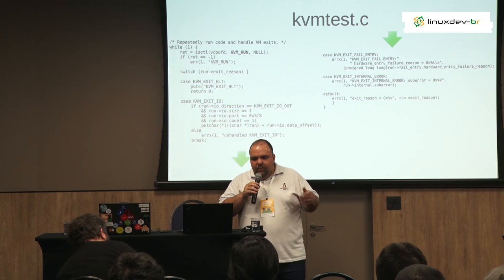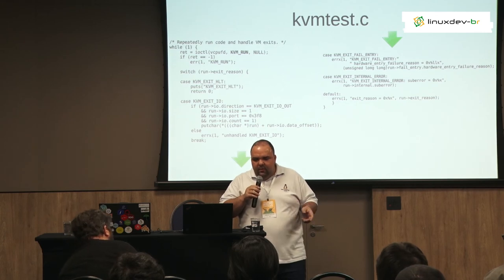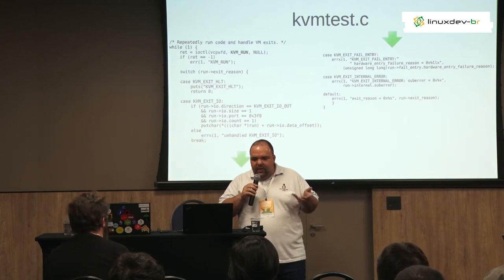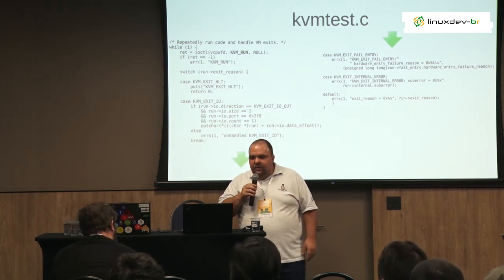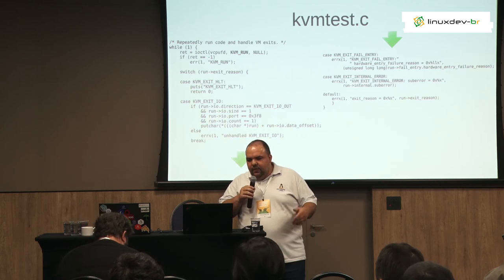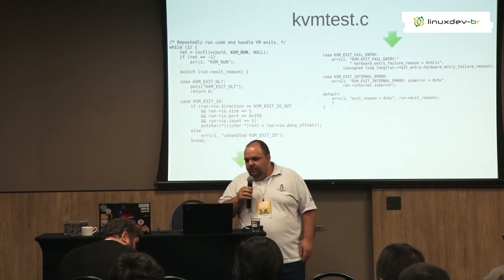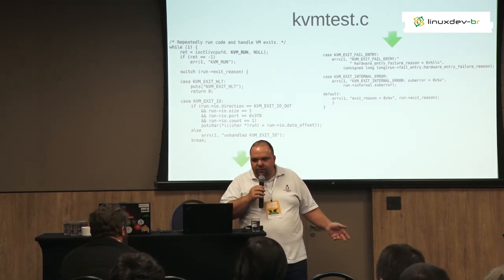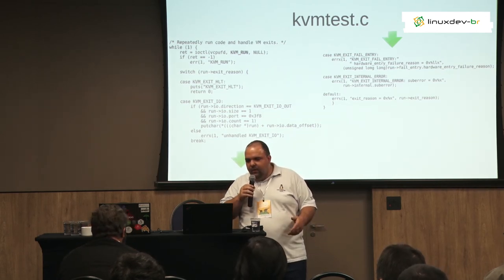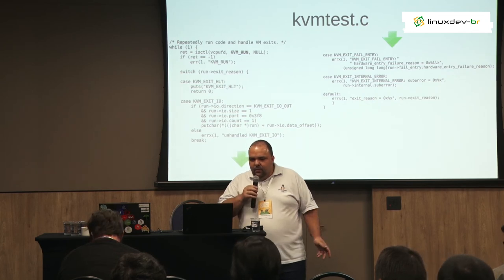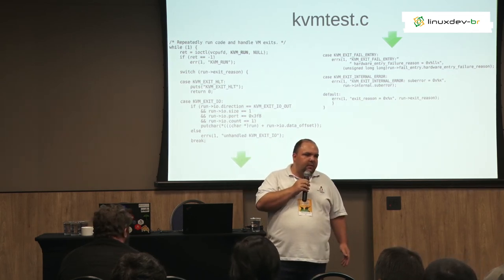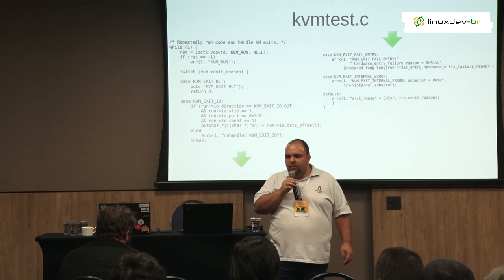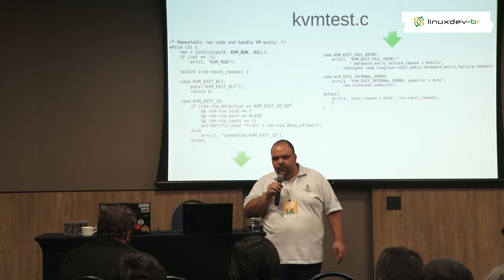In this example, there is a KVM_EXIT_IO exit reason, which means the code tries to access, write, or read from some devices. We check because we know beforehand that the instructions will try to write to a serial console port at a specific IO port address that we assembled before. So we check what kind of KVM_EXIT_IO occurred and we try to emulate it. This emulation is pretty simple — we just grab what the KVM tried to write and call putchar to print in our terminal. It keeps running until there is an exit failure, internal error, or the machine is halted.